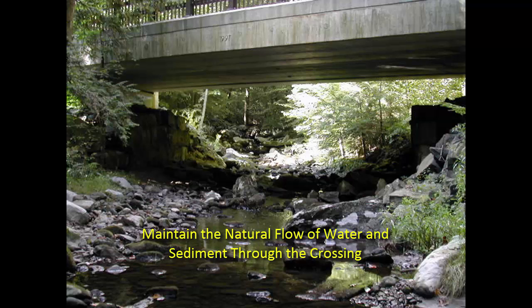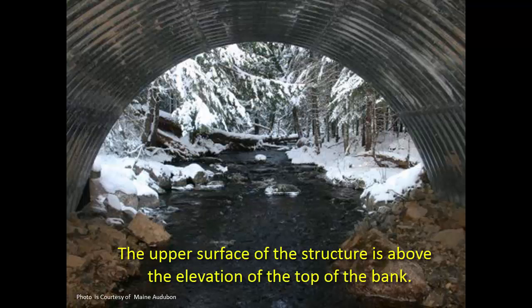This is accomplished by using an open-bottom span where the bottom of the span is above the elevation of the top of the stream bank. If an open-bottom span is not practicable, an embedded structure can be used where the upper surface of the structure is above the elevation of the top of bank, and where the structure bottom is embedded in substrate that matches the natural stream channel.